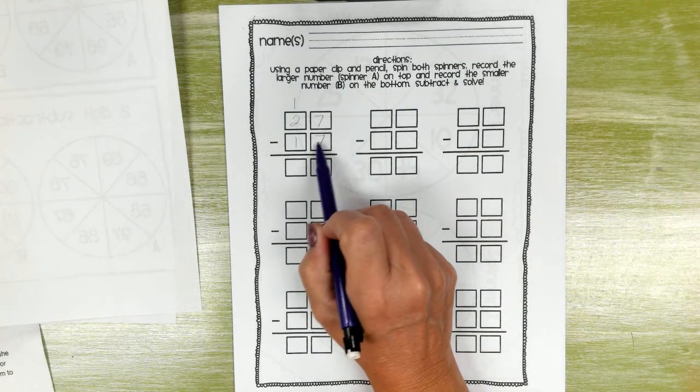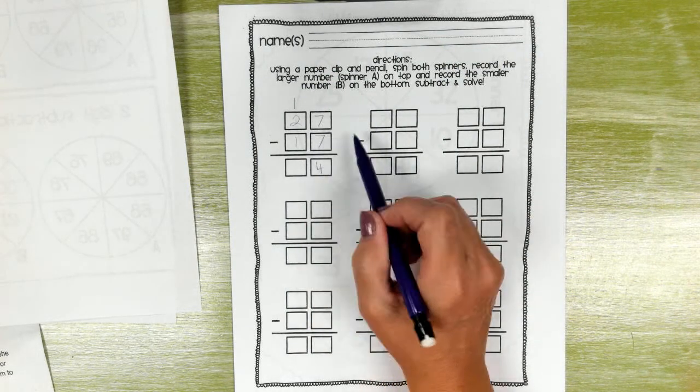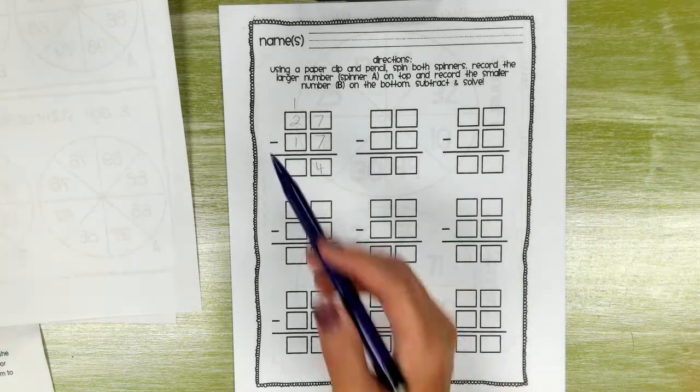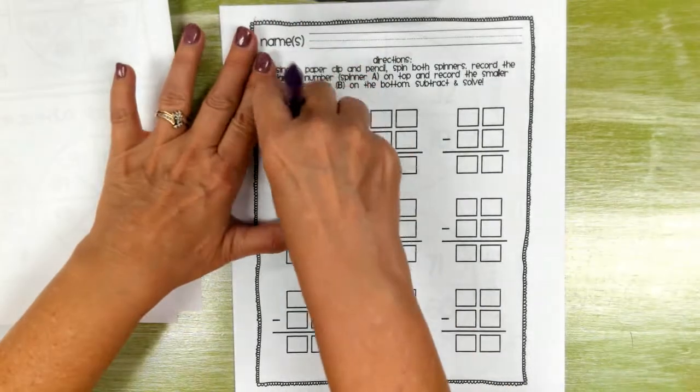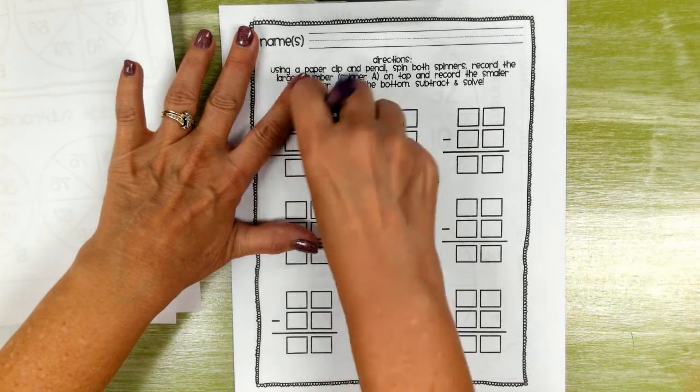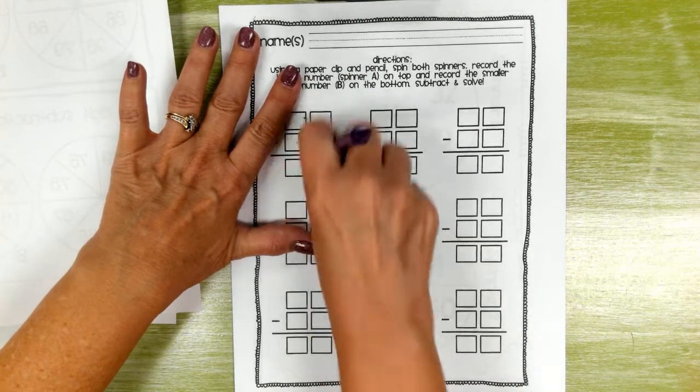You might tell them, 'Put a three there,' or actually a two, so you'll have a nine, so they're not having to regroup. Because we're not quite there yet - they need to get the concept of subtraction first.